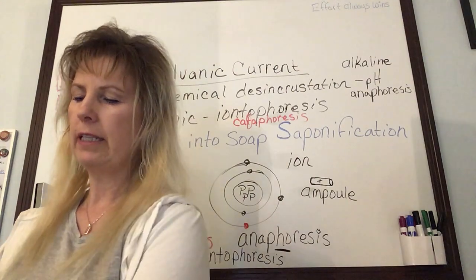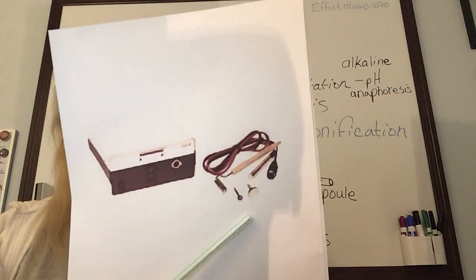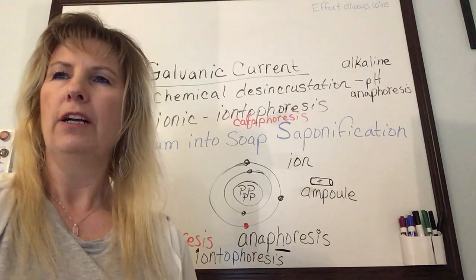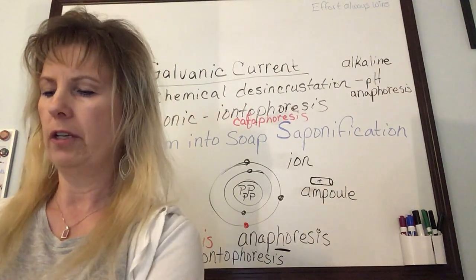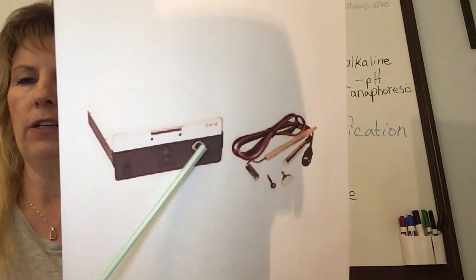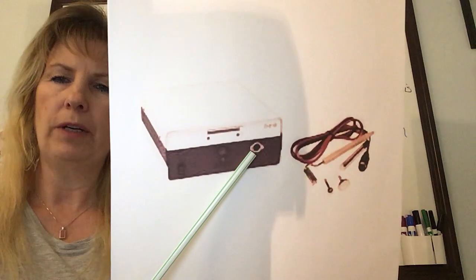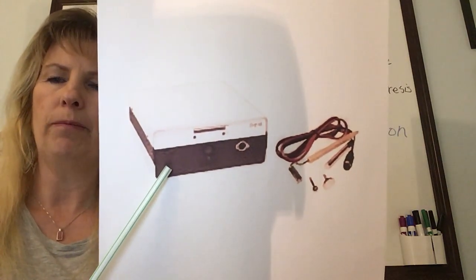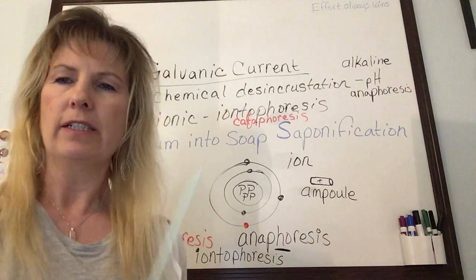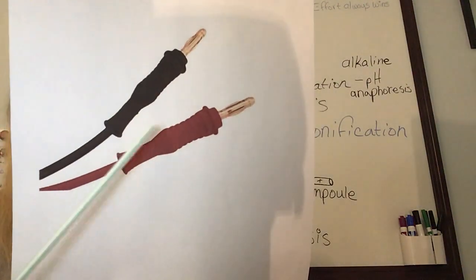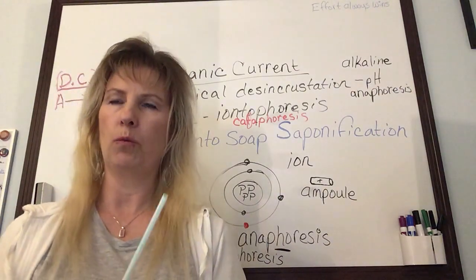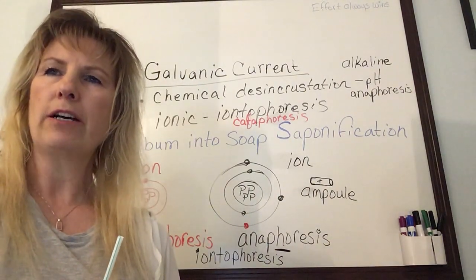When using electrodes, keep them moving at all times. Some machines have a switch on the panel to control positive and negative mode. Others require you to manually insert the cords into the different negative and positive ports. It depends on the machine you're using.